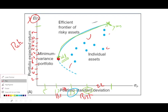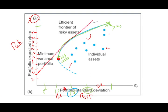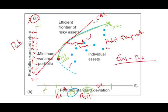If we introduce a risk-free asset at 4% and draw a capital allocation line that tangentially touches the efficient frontier at one point, that tangent line represents the highest Sharpe ratio — meaning you are getting the most return for your risk. The Sharpe ratio is the expected return minus the risk-free rate divided by the standard deviation. The point where the capital allocation line is tangent to the efficient frontier is considered the optimal portfolio, and investors love this point because it gives them the highest return for the risk taken.